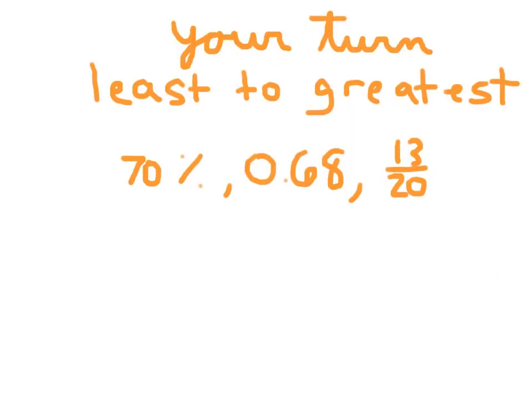Alright, your turn. Least to greatest. Remember to write that equivalent decimal first. Please hit pause. Alright, the first equivalent decimal that you should have written down is 0.7. If you wrote down 0.70, I would have accepted that as well.